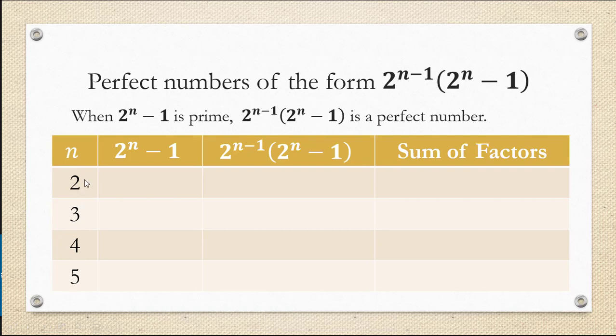We're going to look at each one of these values and plug them into 2 to the n and subtract 1 and see if we get a prime. If we do, then we're going to find 2 to the n minus 1 times 2 to the n minus 1. And that is guaranteed to be a perfect number. So we'll go ahead and add up all of the proper divisors and prove that it is.